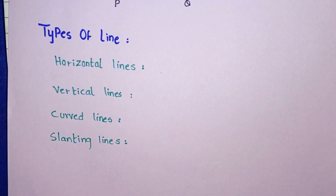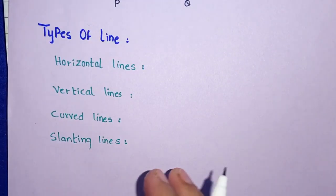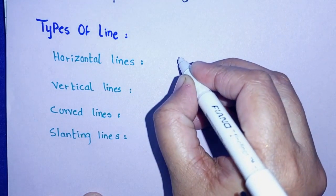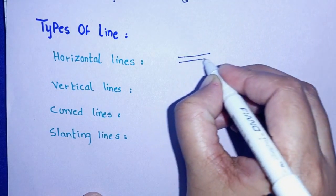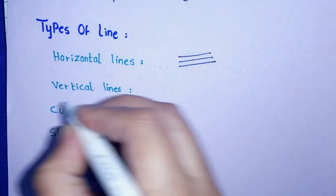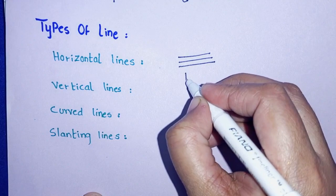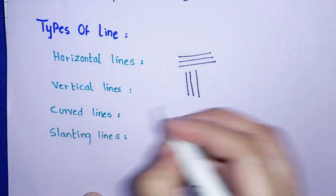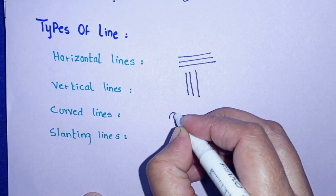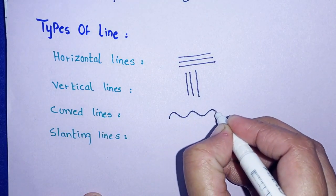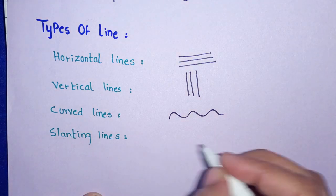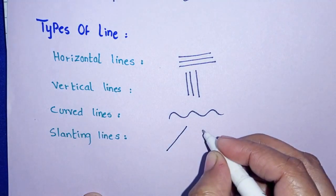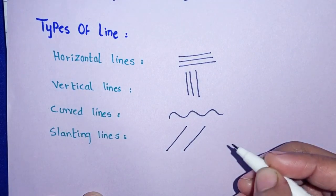Now let's move to types of lines. We have different types of lines. First are horizontal lines — lines that go in this direction. Second are vertical lines — lines that go in this direction. Then there are curved lines, which are not straight. And slanting lines, which are like a slide — these are called slanting lines.